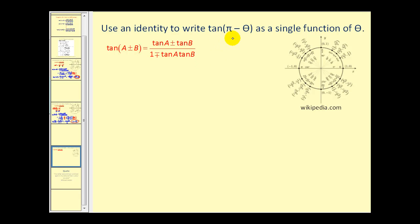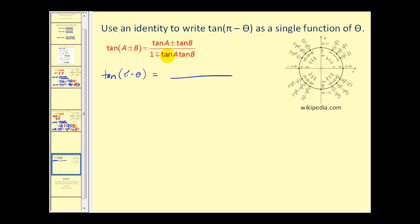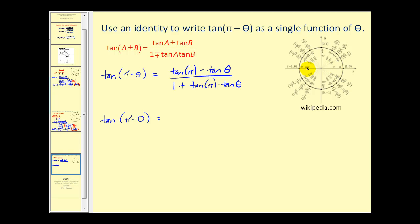The last problem: use an identity to write tangent of (π minus θ) as a single function of θ. Applying the difference identity, the numerator is tangent π minus tangent θ, and the denominator is 1 plus tangent π times tangent θ. On the unit circle, tangent π equals y/x = 0/−1 = 0. So we get 0 minus tangent θ over 1 plus 0, which equals negative tangent θ.